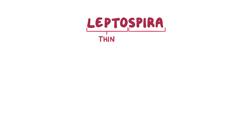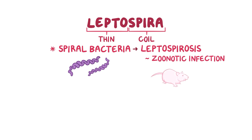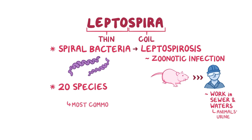With leptospira, lepto means thin and spira means coil. So leptospira is a genus of spirobacteria known to cause leptospirosis, a zoonotic infection, meaning it can be transmitted from animals like rodents to humans. The leptospira genus has over 20 species, and the most common species that causes leptospirosis in humans is leptospira interagans.